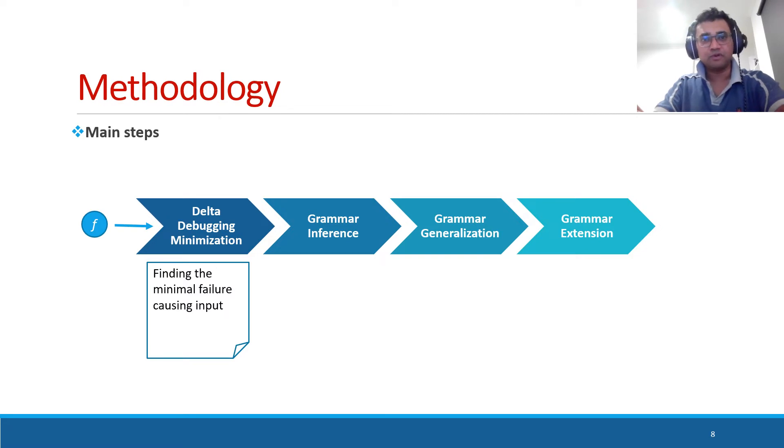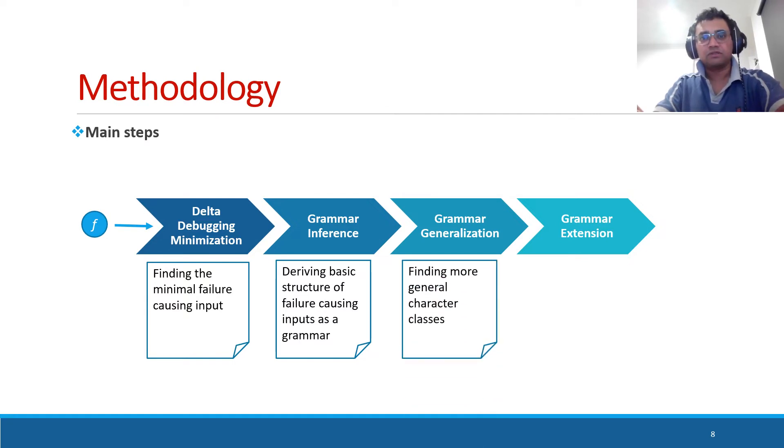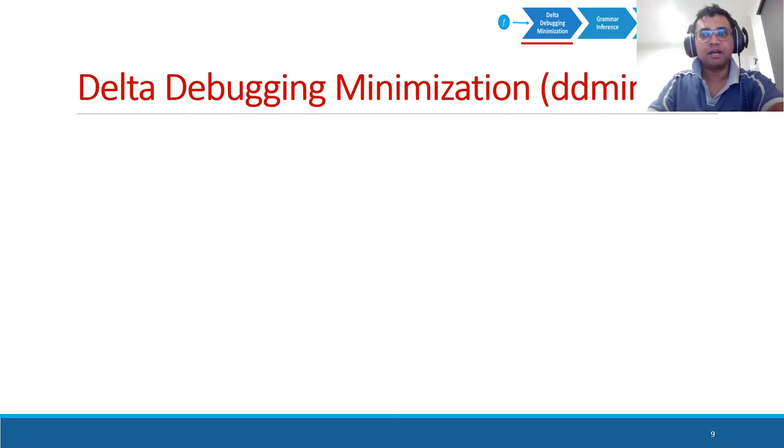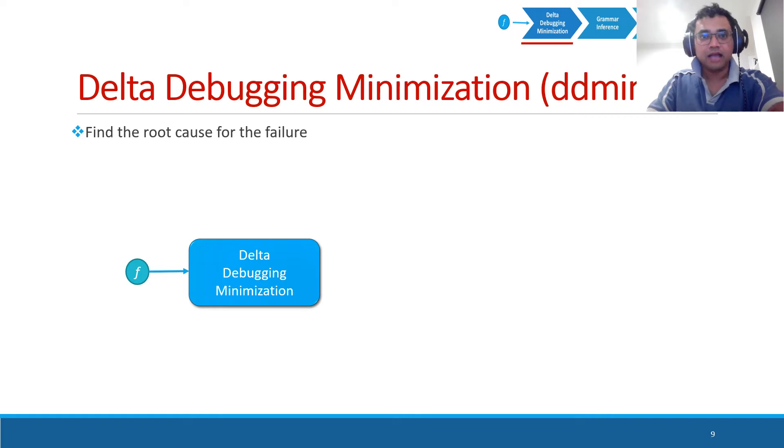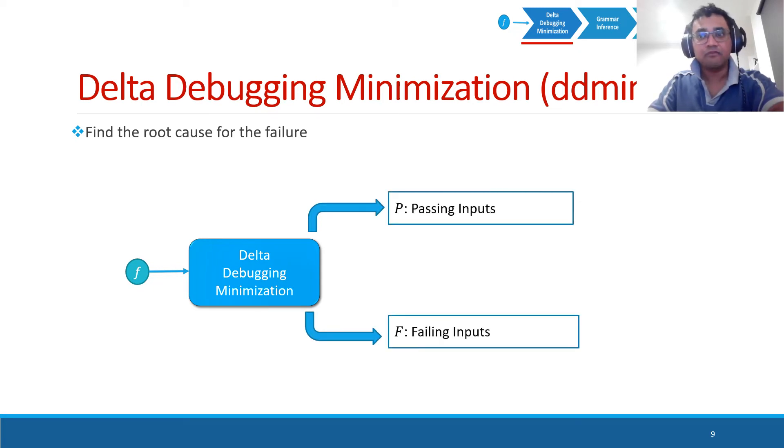Delta debugging minimization is the process where we zoom in to the root cause of the failure. That means, we find the minimal failure causing input. The first step of Grammar2Fix is delta debugging minimization. This is an algorithm used to find the root cause of a failure in software testing. We apply delta debugging minimization to the given failing string. As delta debugging minimization follows a divide and conquer approach, we can find a set of passing inputs and a set of failing inputs. So in the set of failing inputs, we can find the minimal failing input or the root cause for the failure.